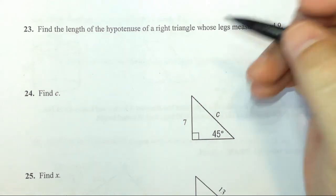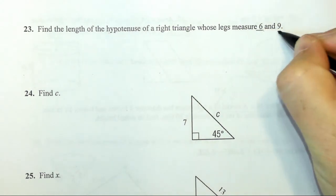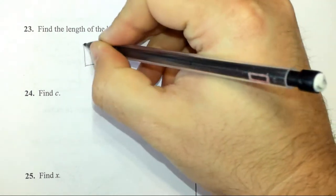Number 23 tells us to find the length of the hypotenuse of a right triangle whose leg measures are 6 and 9. Well, I'm going to go ahead and draw this guy out.